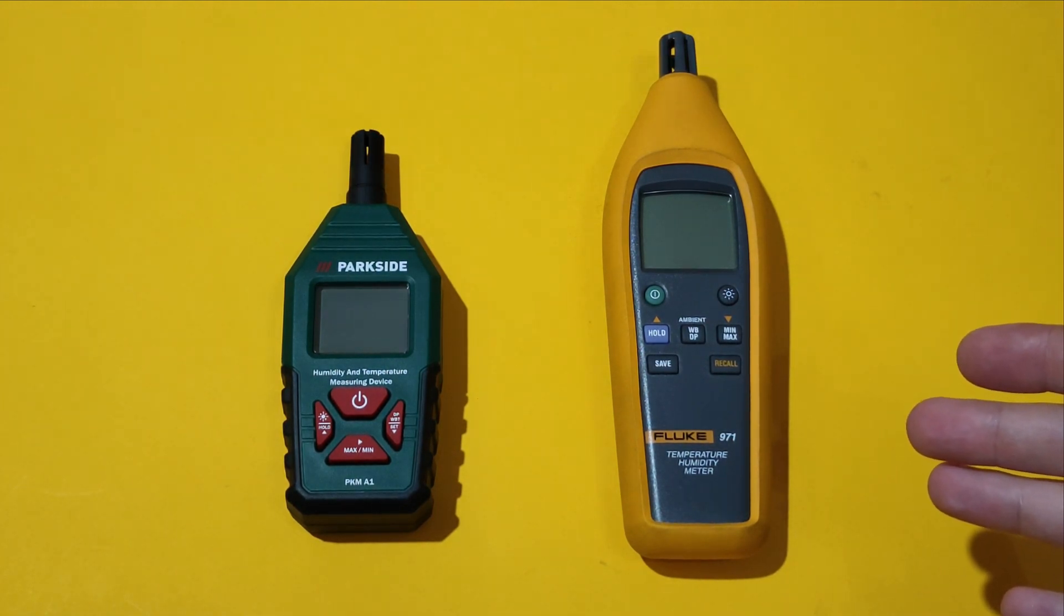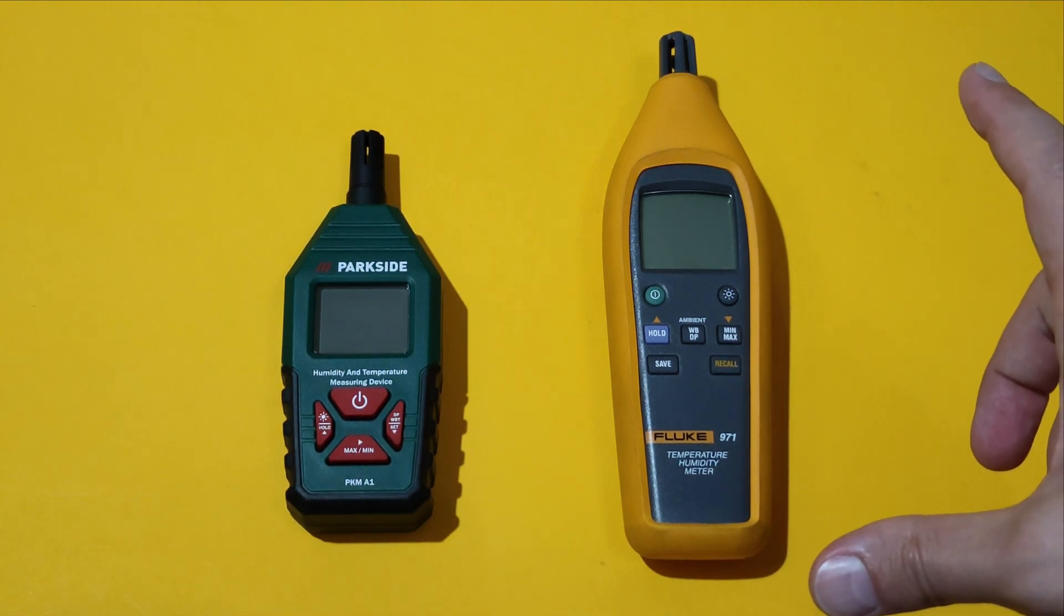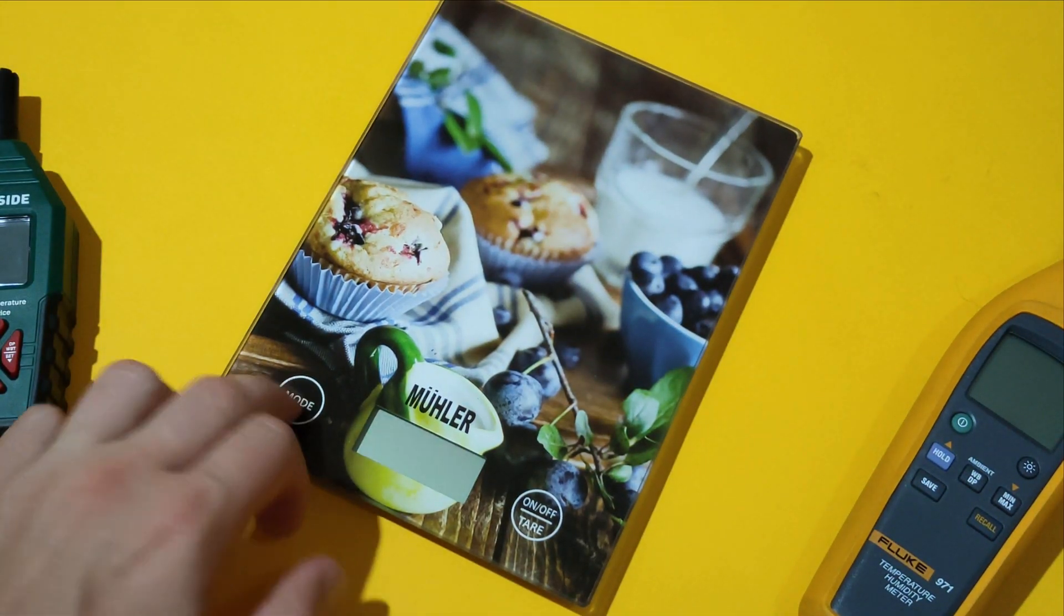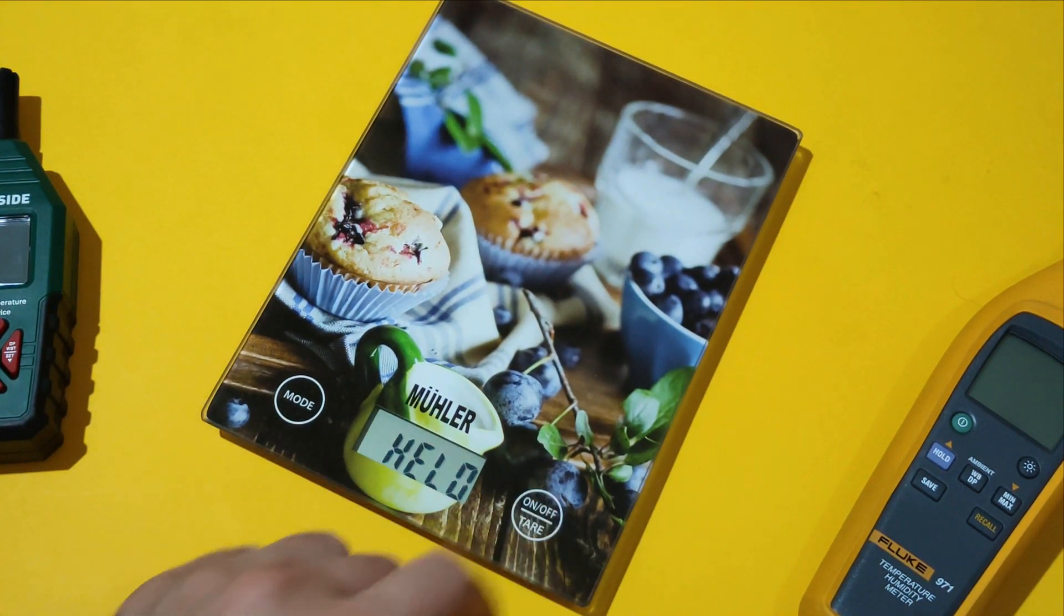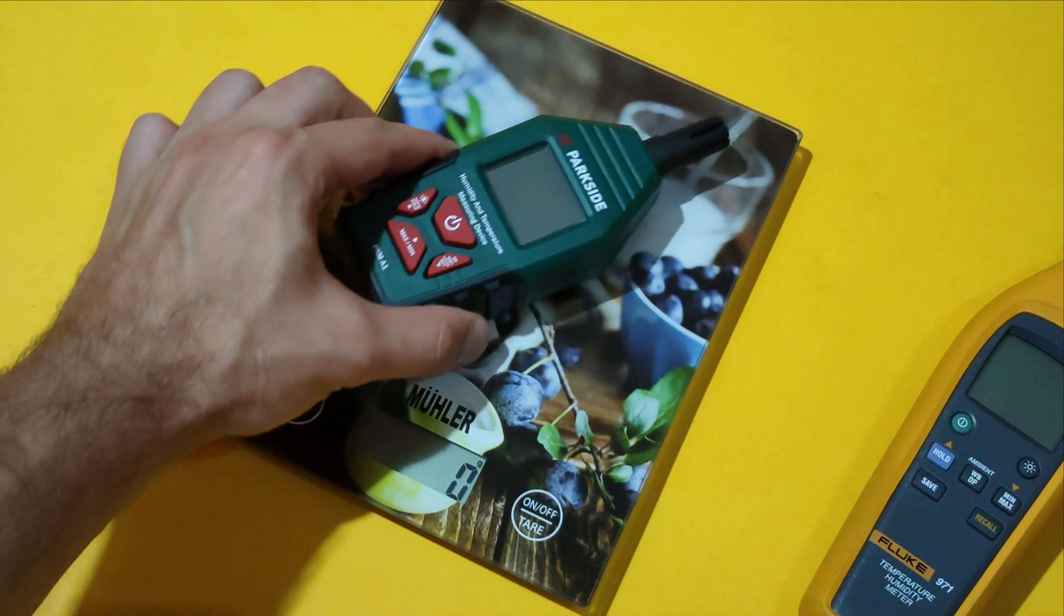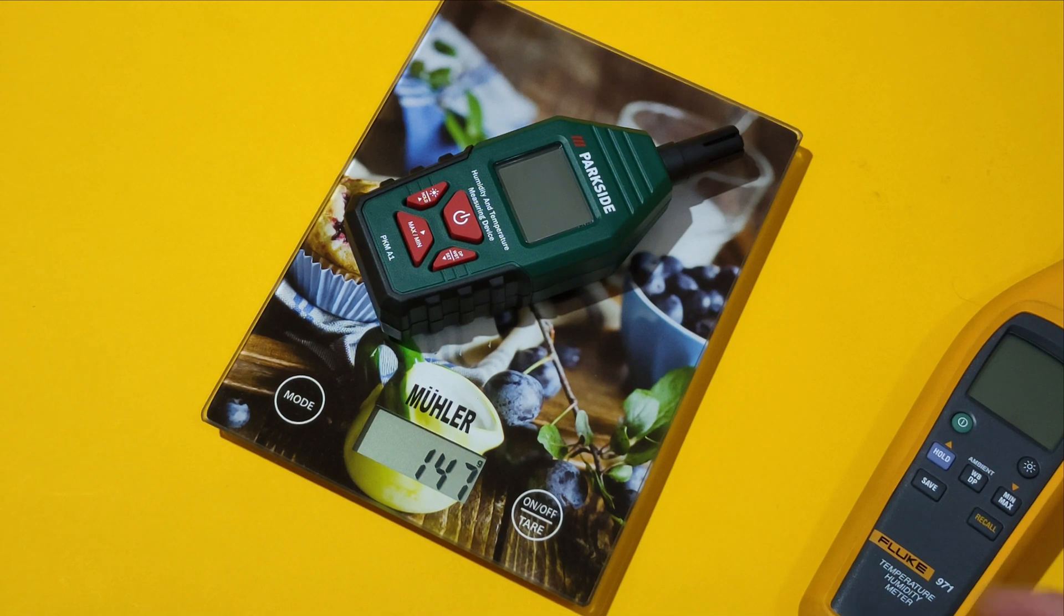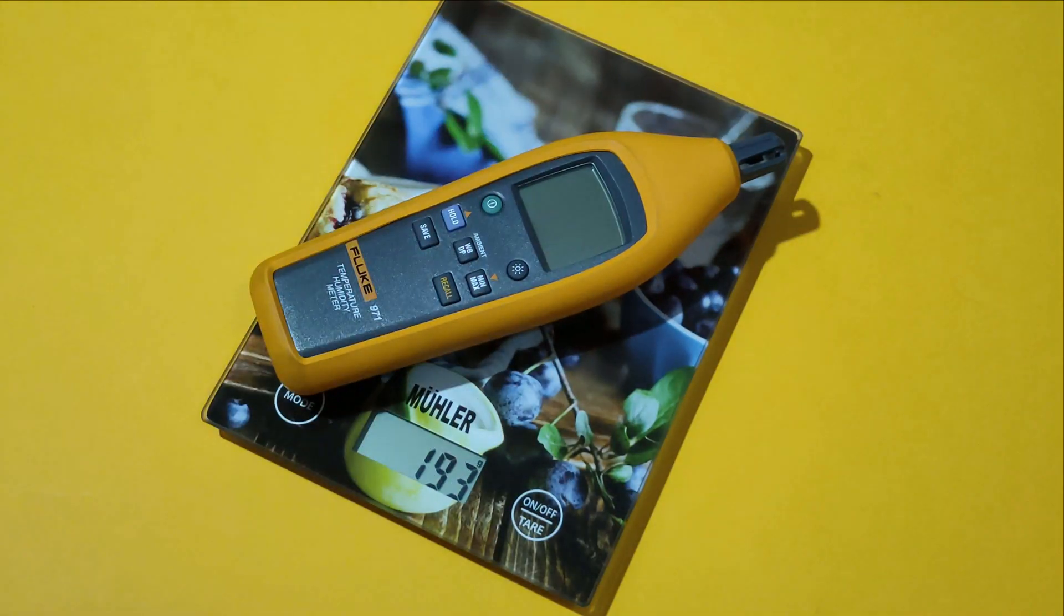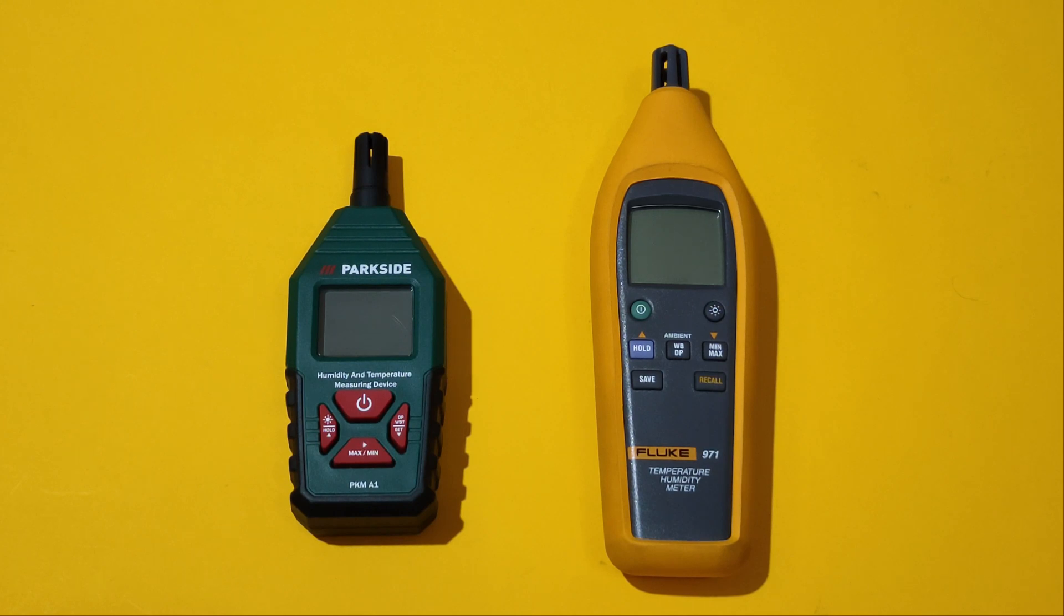In order to evaluate the qualities of the Parkside device, here we have this professional Fluke 971 temperature and humidity meter. As you can see, it's a little bit longer than the Parkside. It has almost identical functions as the Parkside. Let's measure the weight of the both devices. Parkside with the batteries weighs 146 grams and the Fluke with its batteries weighs a little bit more, 193 grams. Let's start the devices and compare the readings.